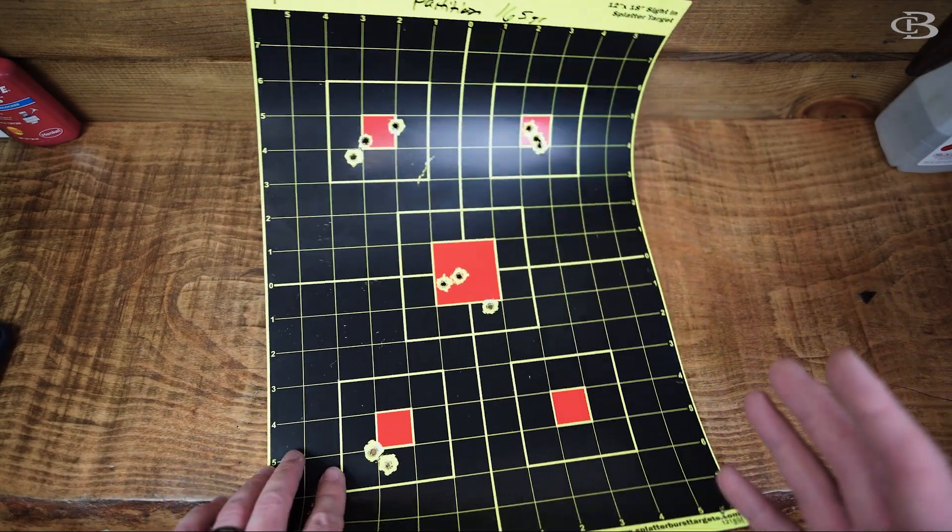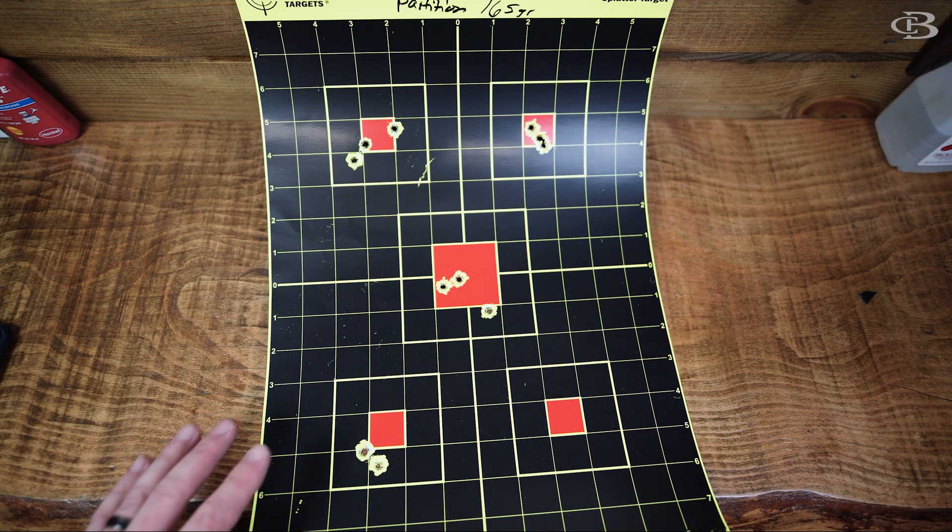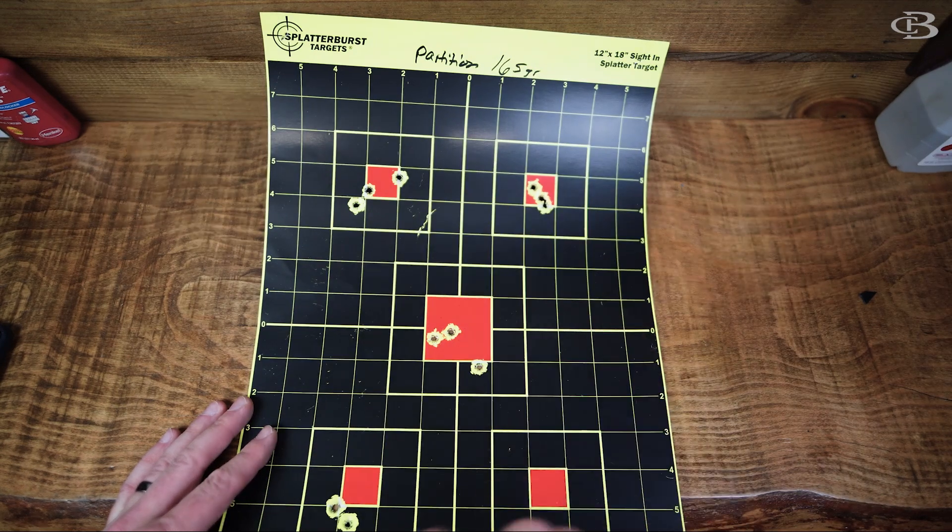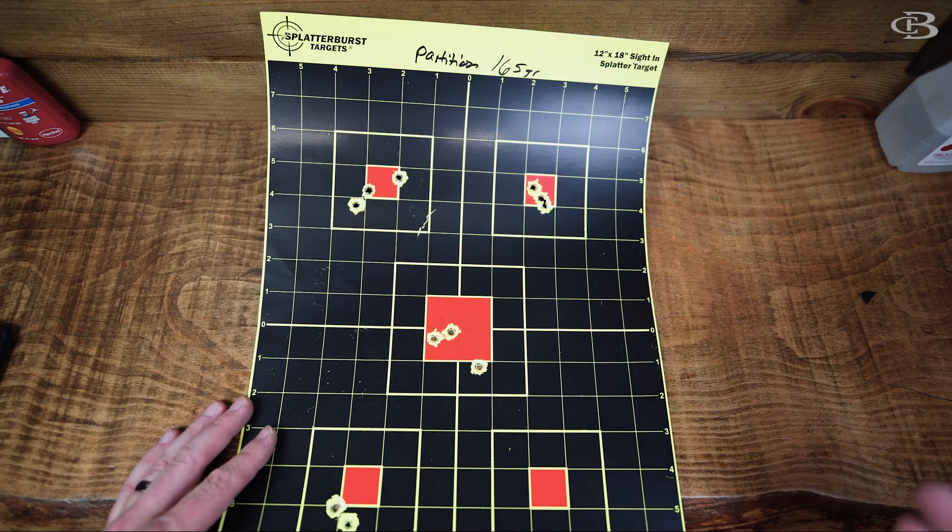As far as a non-tipped bullet goes, I think Nosler Partition, like I said, is definitely a top three. You're going to make a shot on any of these where you're aiming, you're going to probably make a great shot, as long as you do what you need to do.